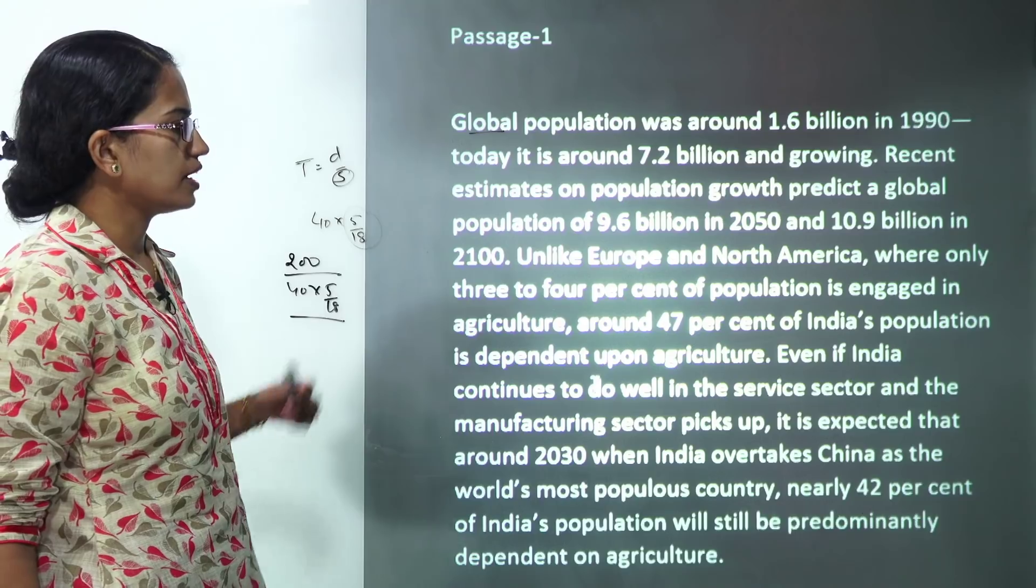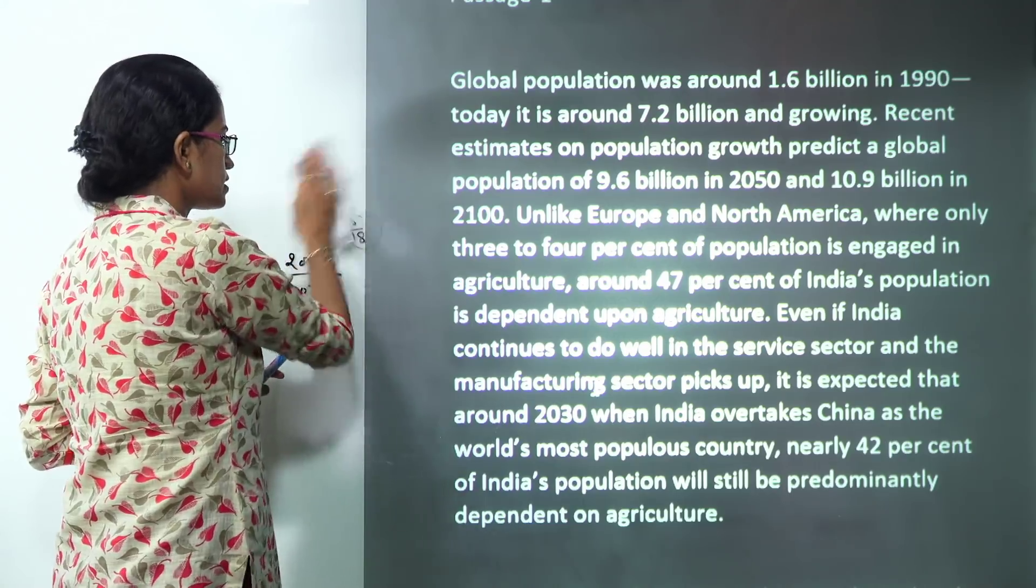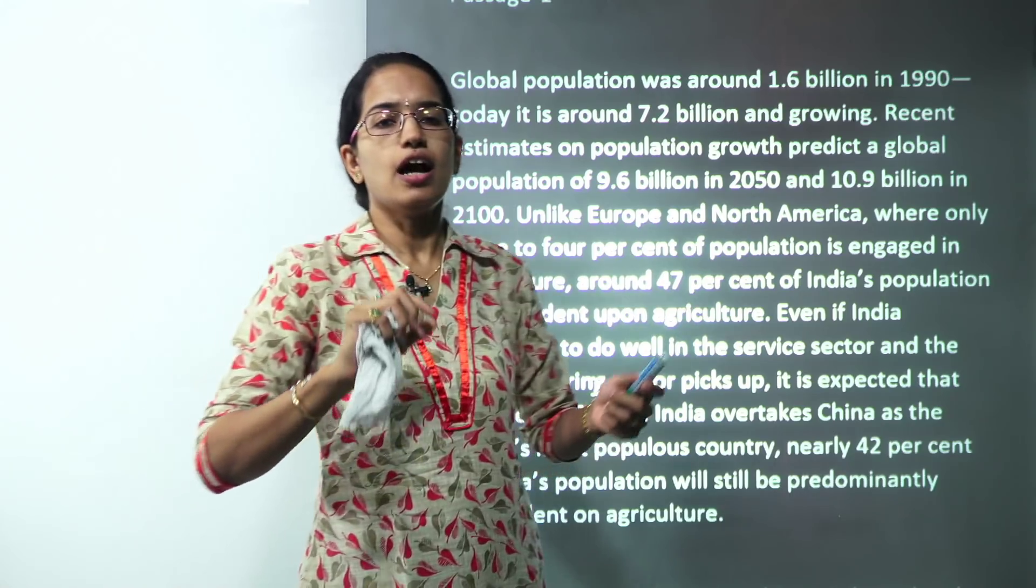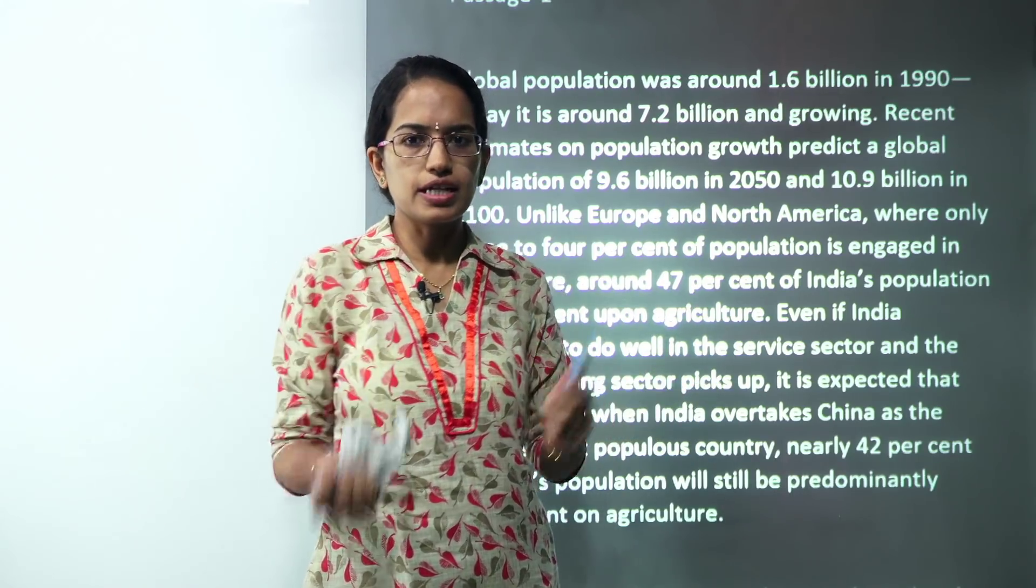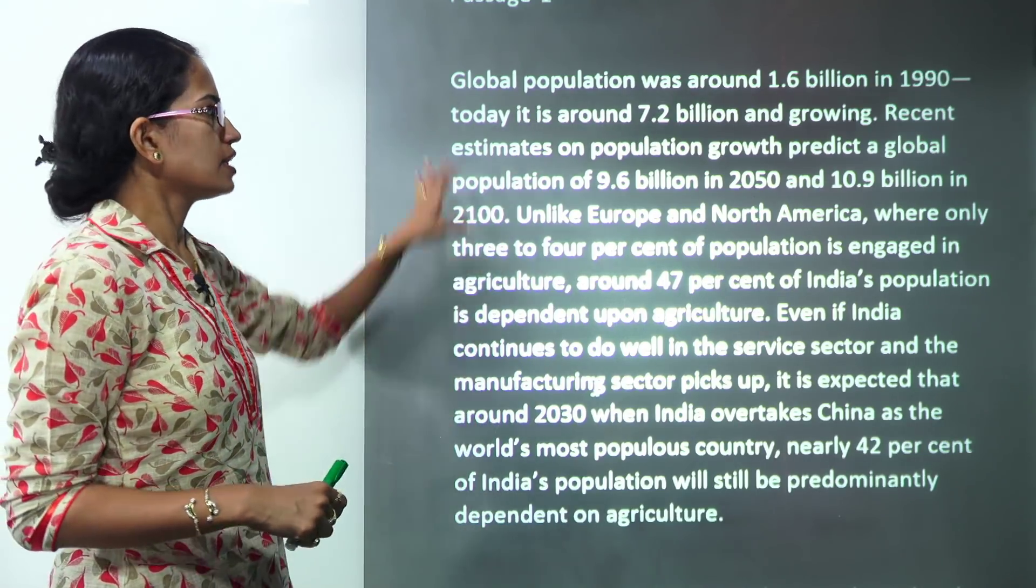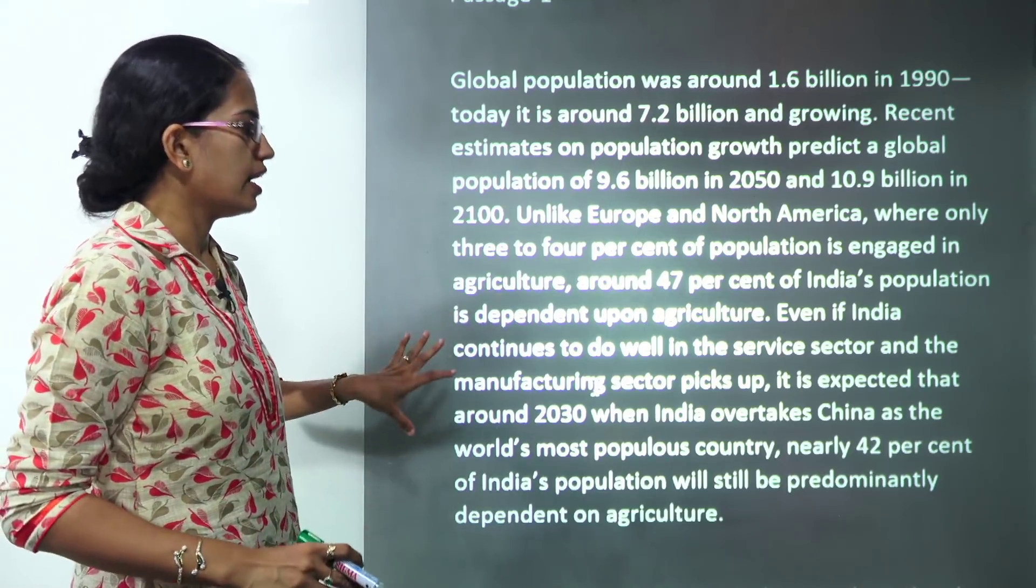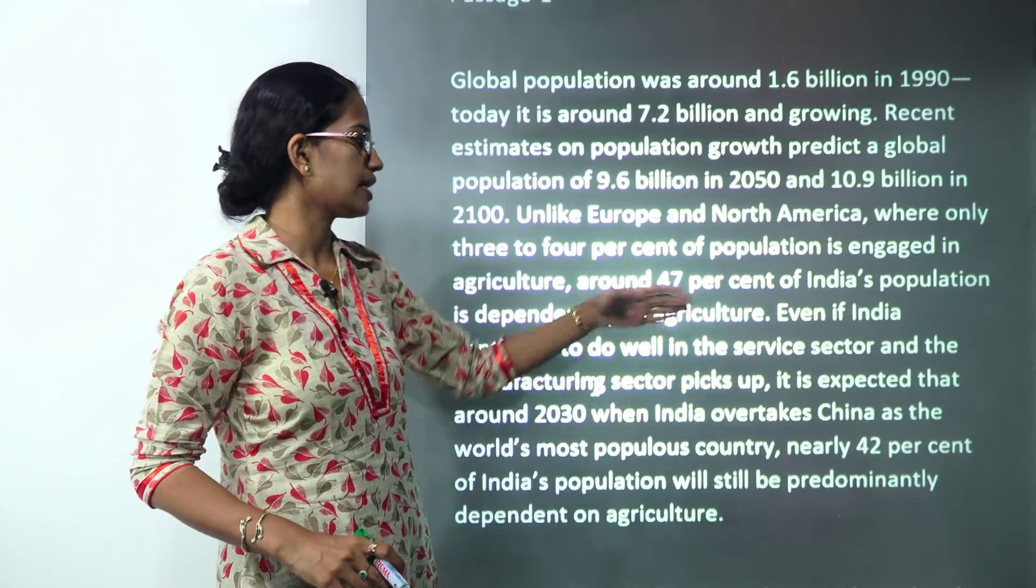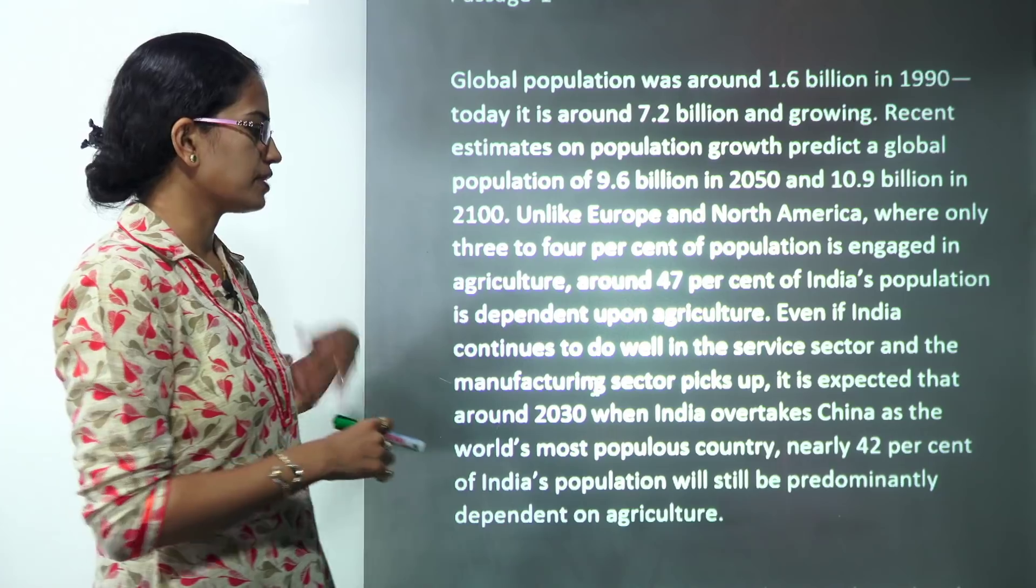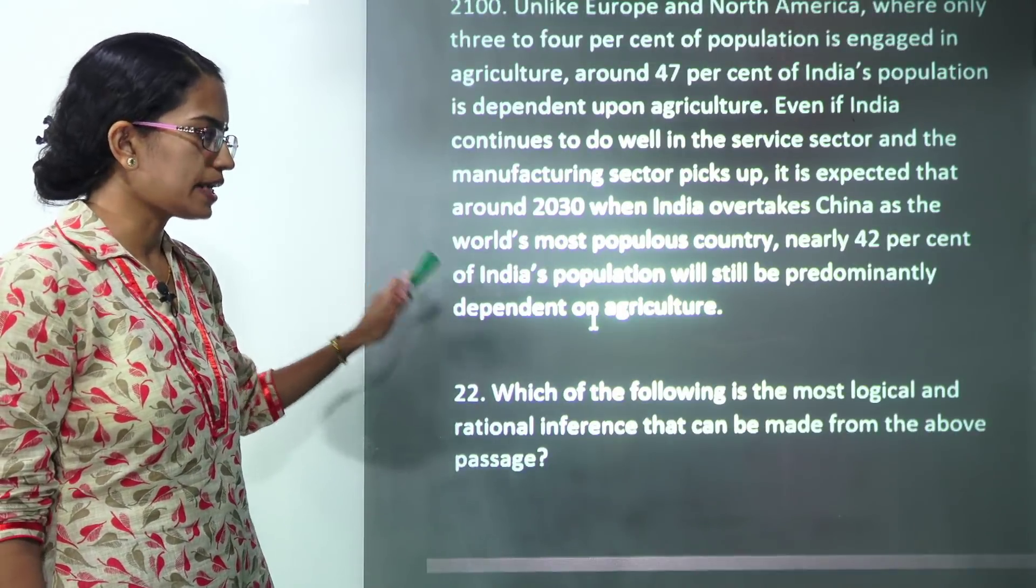Now we have a couple of passages here. This time it was surprising that all the passages were very direct in nature. There was no passage from any novel or any passage with difficult English. Most of the passages were directly from newspaper excerpts. Now this passage talks about the global population, how it has been growing, and India scenario where it says that India has at present nearly 47 percent of the population that is dependent on agriculture.